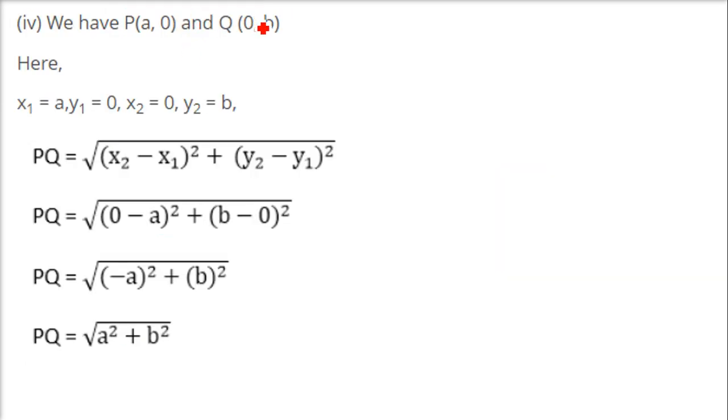How about this one? It is (0 minus a) whole square plus (b minus 0) whole square, so this is a squared plus b squared. Under root a squared plus b squared is the answer.